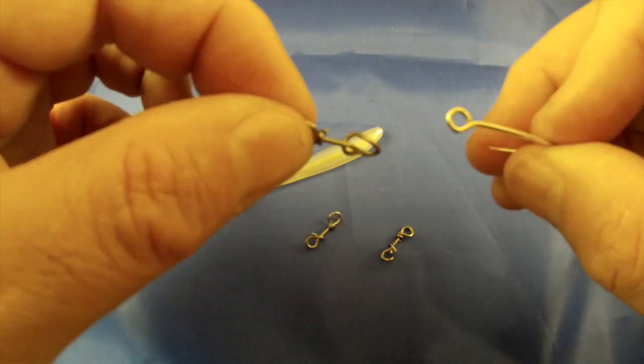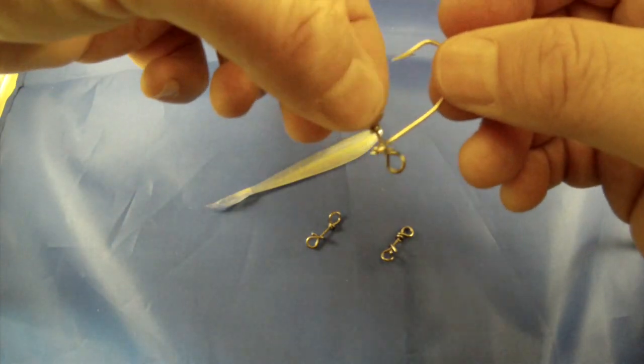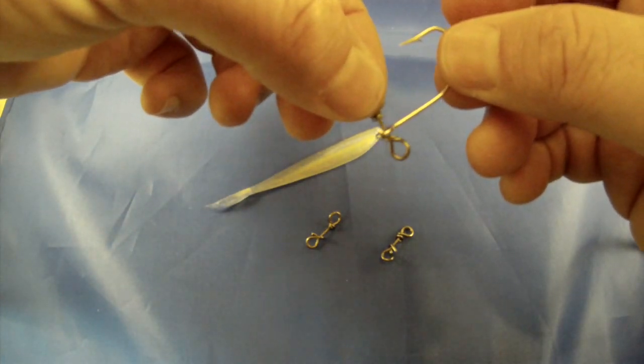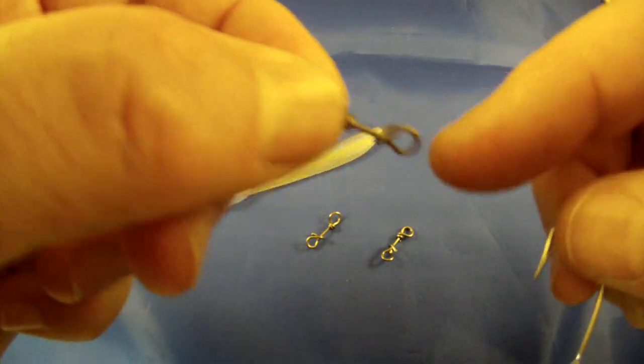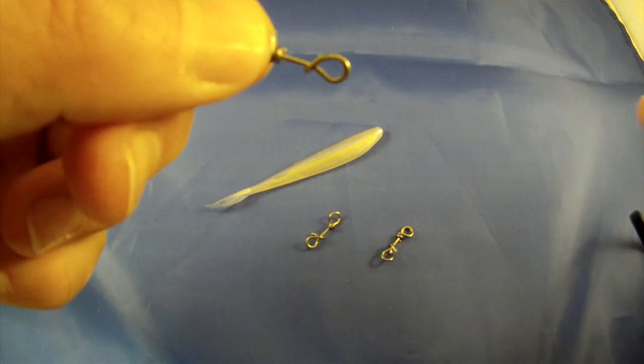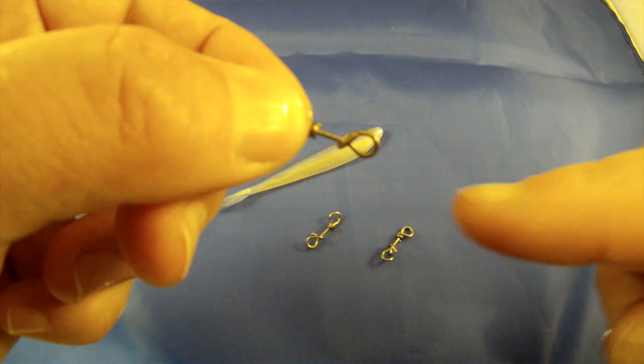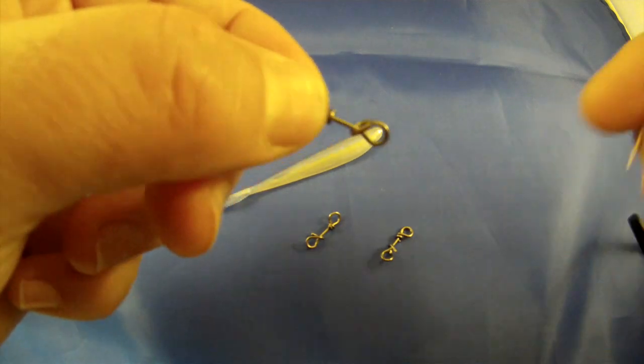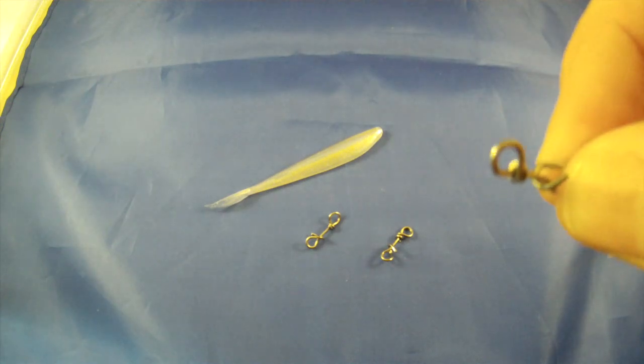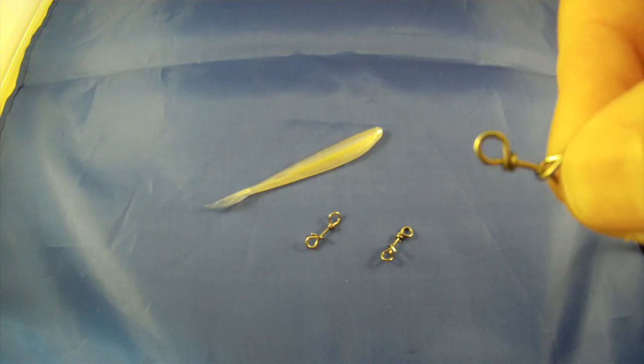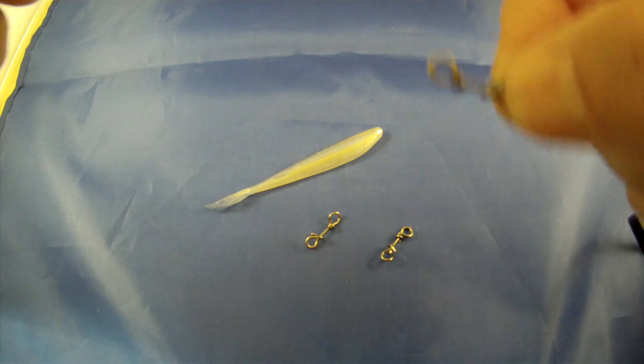So basically, if you want your hook to ride point up, this is the bottom that ties into your leader that's going to go to your deadhead jig head and dead assassin fluke, and this closed end up here ties into your line that goes to your reel.